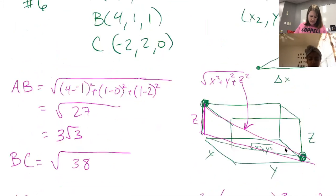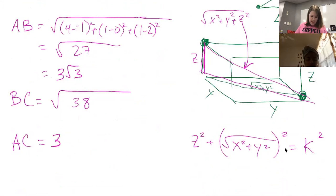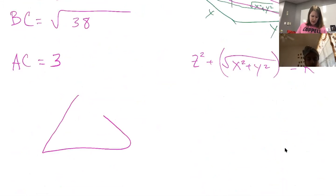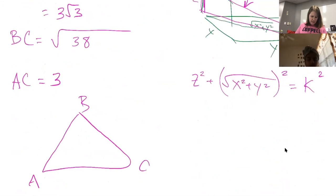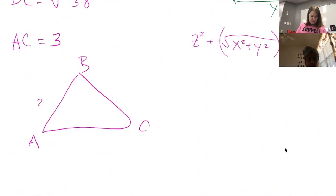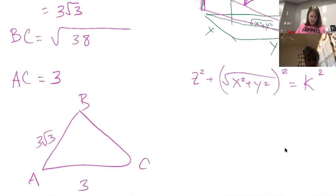Which is three. Now you've got your triangle where AB is 3 root 3, AC is 3, and BC is root 38. Now you can do the law of cosines to find the measure of angle ABC.